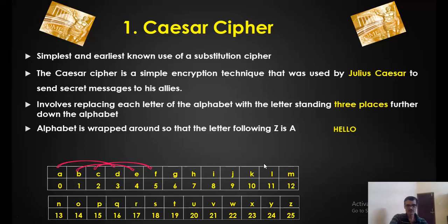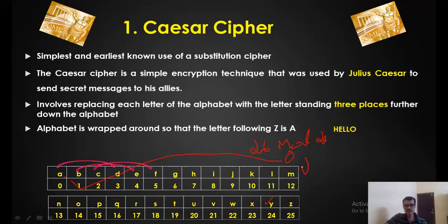For example, take 23 plus 3 equals 26. Then 26 mod 26 equals 0. Why mod 26? Because we have a total of 26 alphabets. So the 0th alphabet is A. For Y: 24 plus 3 is 27. So 27 mod 26 is 1, and the first alphabet is B. That means Y is replaced by B and Z is replaced by C.